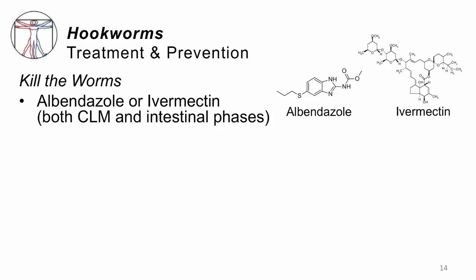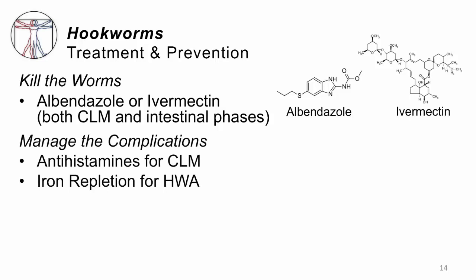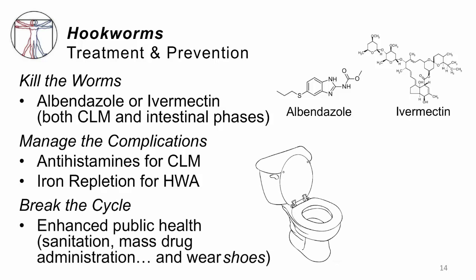What do we do to treat these patients? There are two drugs that work quite well. One is called albendazole, the other is called ivermectin. Both are taken by mouth, both are well absorbed, and both will make their way into the patient's tissues through the bloodstream — so whether it's the intestinal phase or cutaneous larva migrans, the same drug works quite well. For people with an itchy rash, give them antihistamines so they don't scratch and set up a secondary infection. If you're working with young children who are heavily infected, they need repletion of their iron, and once you kill off the worms, they need to try to regain the growth they have lost. Breaking the cycle is about enhanced public health — better sanitation, periodic community treatment with albendazole or ivermectin, and of course, wearing shoes.